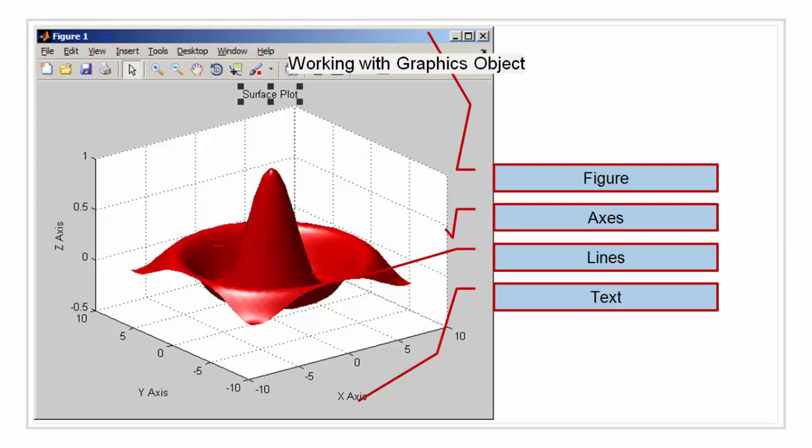Different types of graphs use different objects to represent data. Because there are many kinds of graphs, there are many types of data objects. Some are general purpose such as lines and rectangles and some are highly specialized such as error bars, color bars and legends.